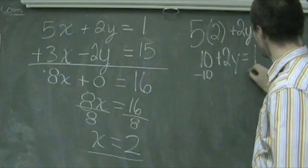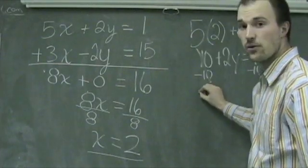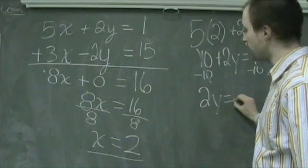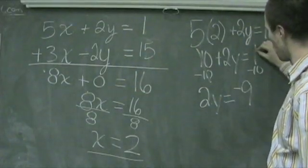Subtracting 10 from both sides, we find ourselves with the 10s canceling out, and 2y is equal to a negative 9, which is a result of 1 minus 10.